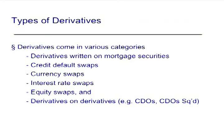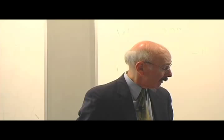Derivatives come in various categories. There are derivatives written on mortgage securities, credit default swaps, currency swaps, interest rate swaps, equity swaps, and derivatives on derivatives — for example, collateralized debt obligations, or collateralized debt obligations squared, a derivative of the first.